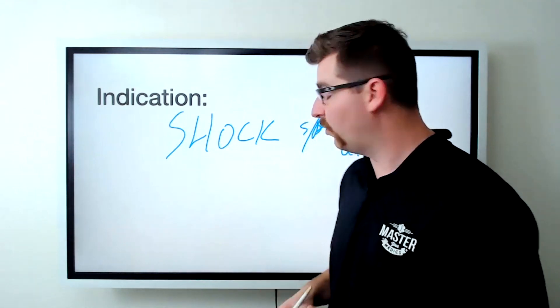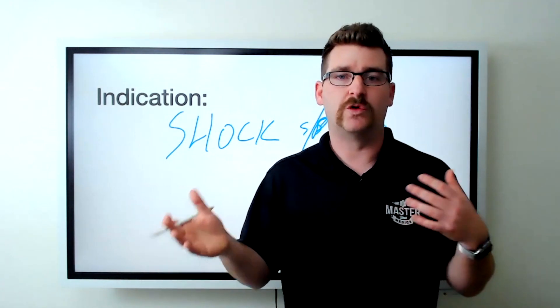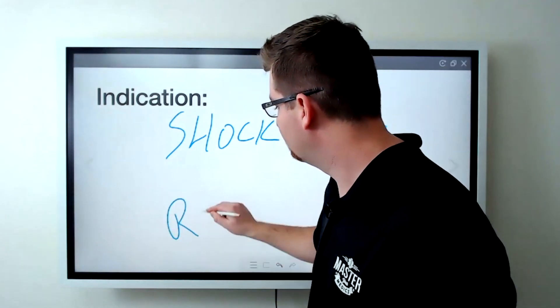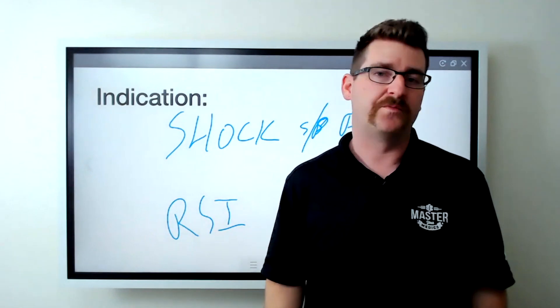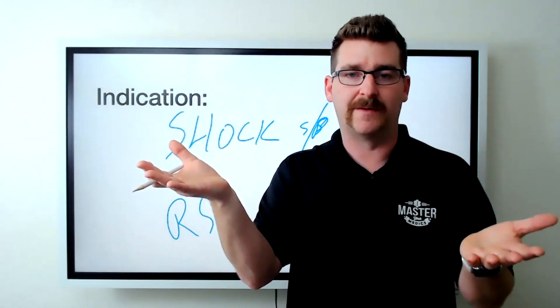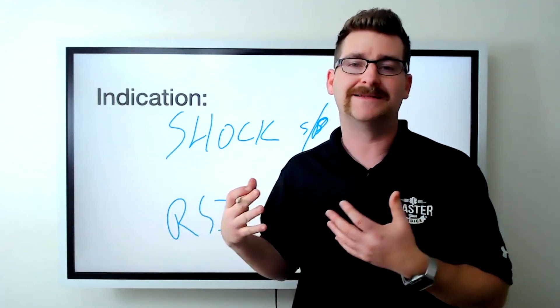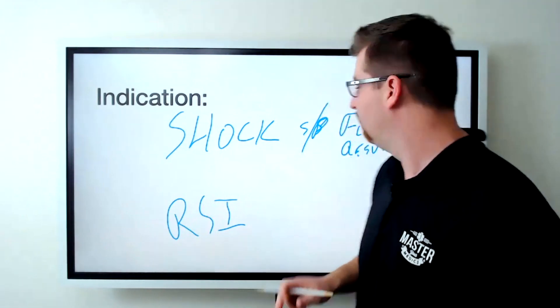On top of that, when we go to do an RSI on a patient, RSI medications drop patients' blood pressures. So we can give this just before RSI to help to keep that blood pressure up as we're giving those paralytics that are going to drop those blood pressures. So if you have an unstable patient and you're managing their airway, this is a great way to do that.